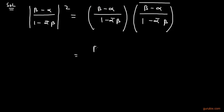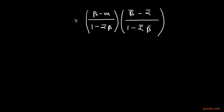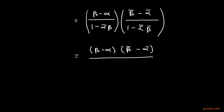This value will be (beta minus alpha) over (1 minus alpha conjugate beta), multiplied by (conjugate of beta minus conjugate of alpha), and then this becomes 1 minus conjugate alpha times beta, minus alpha into beta conjugate, minus alpha conjugate, and here 1 minus alpha into beta conjugate.